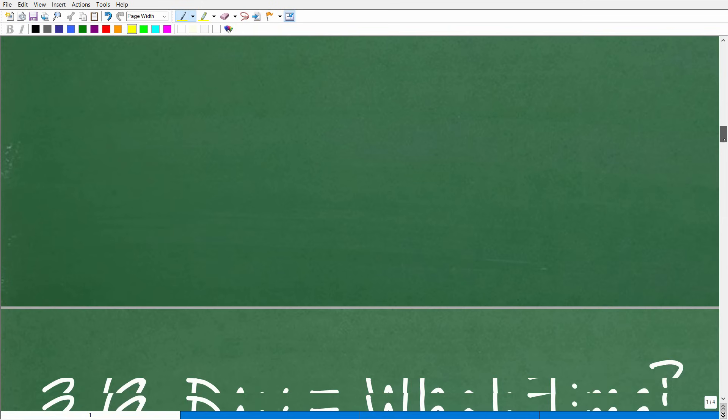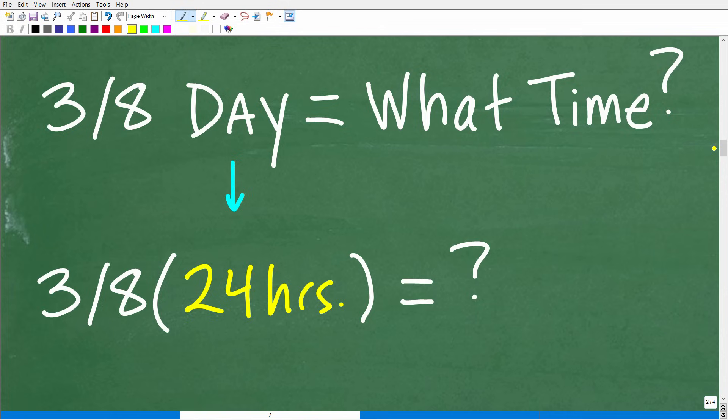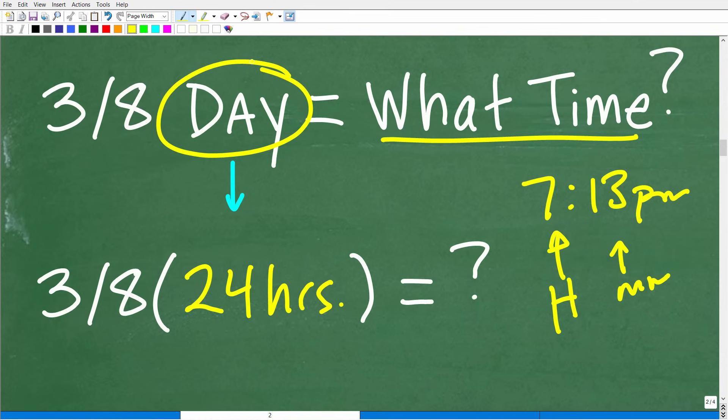Okay, so three-eighths of a day. Well, now I'm thinking about, how do we read time? What time is it? If you ask me what time is it, I might say, well, it's 7:13 p.m. When we talk about time, we're talking about hours and we're talking about minutes. We're not talking about seconds, and we're not talking about days. We're not going to say, oh, what time is it? Well, it's half a day. That's what time it is. We're not going to say that. We're going to generally describe time in hours and minutes.